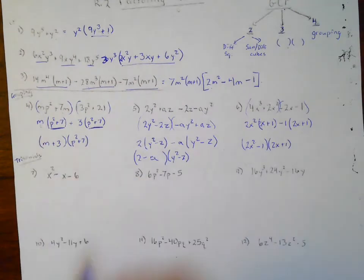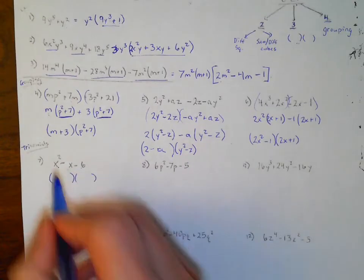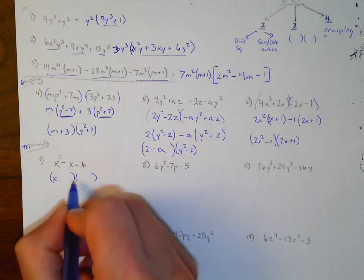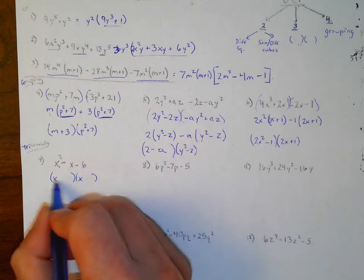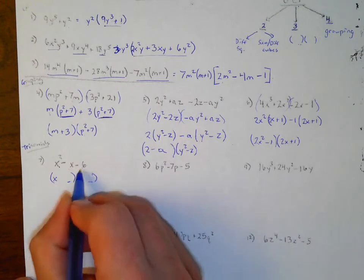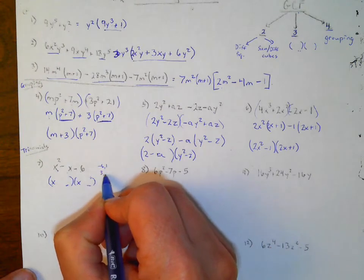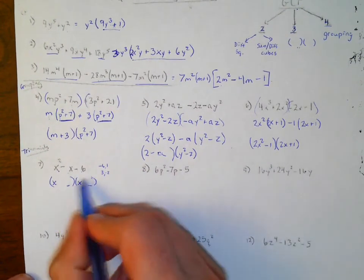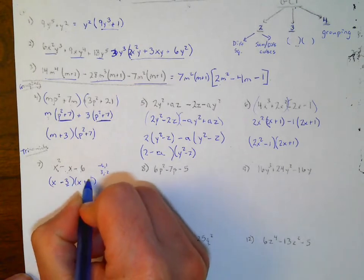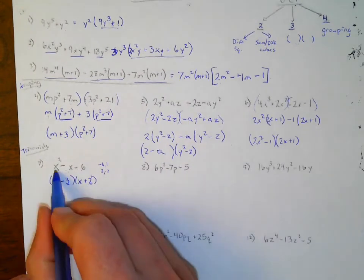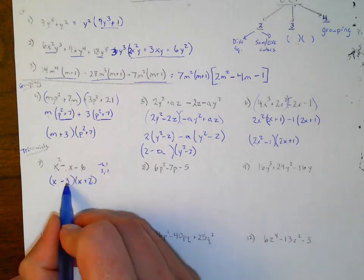For a trinomial with three terms, we set up two parentheses and think it through with trial and error. x times x gives the x². At the end, I need a negative 6, and the outside and inside products must add to give the middle term. What gives negative 6? It might be −6 and 1, 6 and −1, 3 and −2, or 2 and −3. If I need negative 1 as the middle coefficient, I think it's going to be (x+2)(x−3): x×x=x², and 2x−3x=−x, and 2×(−3)=−6.